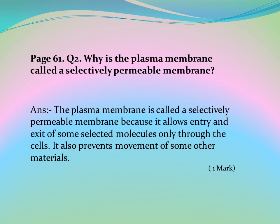Page 61, Question 2: Why is the plasma membrane called a selectively permeable membrane? The plasma membrane is called a selectively permeable membrane because it allows entry and exit of only some selected molecules through the cell, while preventing the movement of some other materials.